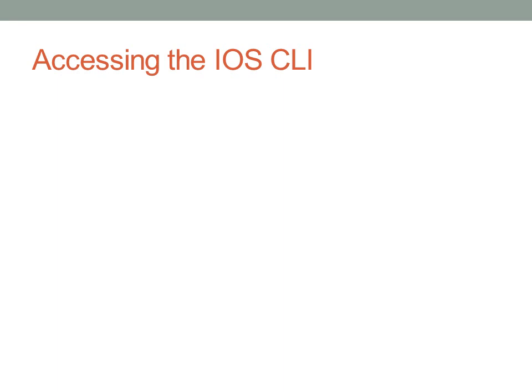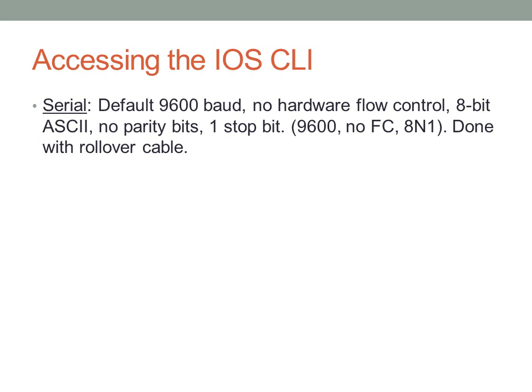Accessing the IOS command line interface can be done in several ways. The primary method used for labs, and a backup method for system administrators, is via a serial cable — a standard 9-pin serial cable. The default settings on most serial devices are 9600 baud, no hardware flow control, and the 8N1 specification: 8-bit ASCII, no parity bits, and one stop bit. This is normally done with a rollover cable that converts a DB9 connection into an RJ45 connection.